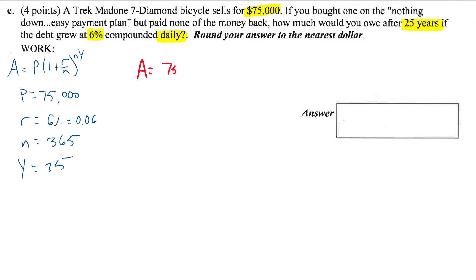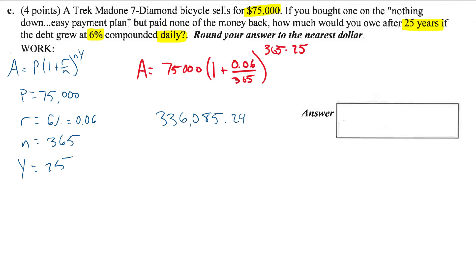Setting this up: A = 75,000 times (1 + 0.06/365) raised to the power of 365 times 25. That's compounding a whole lot, but daily interest is actually pretty low. When you throw that into a calculator, I get approximately $336,085. Rounding to the nearest dollar, the answer is $336,085.